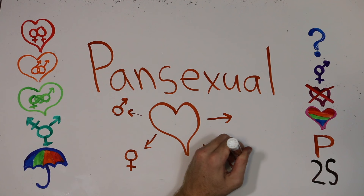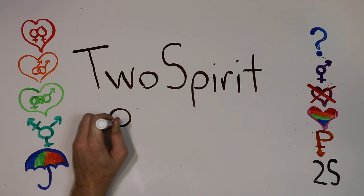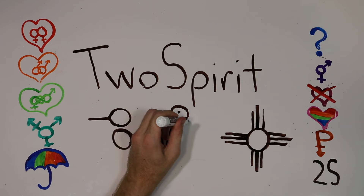And finally, 2S stands for two-spirit. This Native American term applies to people who display both female and male qualities, whether in their personality, sexuality, or gender identity.